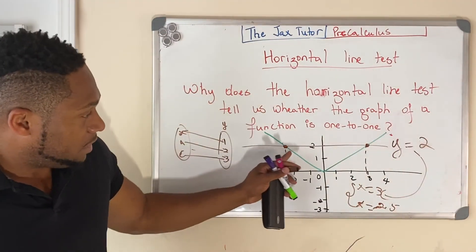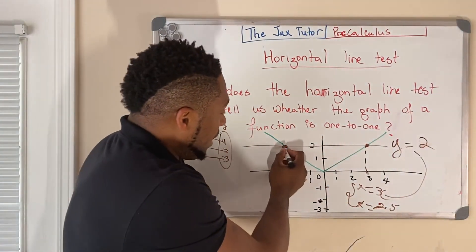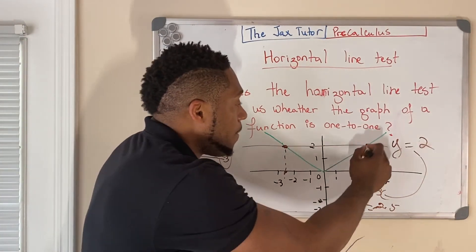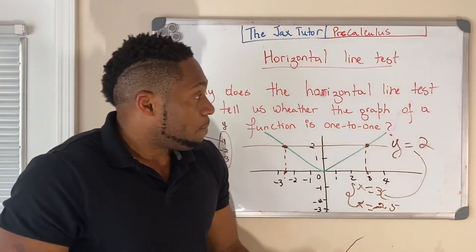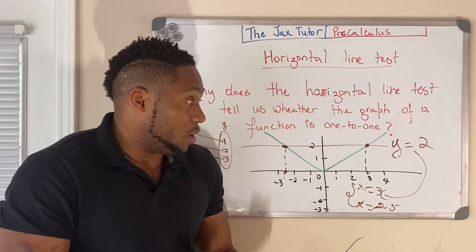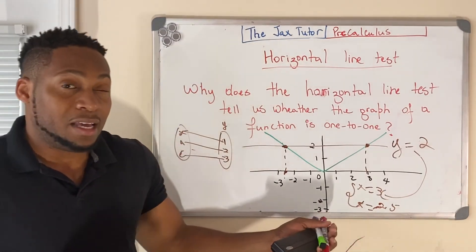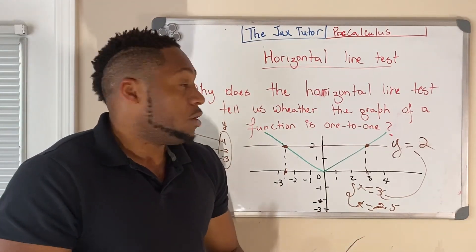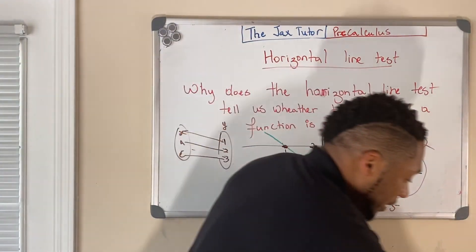And when you take the horizontal line test, you see that it's associated with two different x values, x here and x here. So, that's why the horizontal line test tells you whether or not a function is one-to-one. Thank you, and I think that's it.